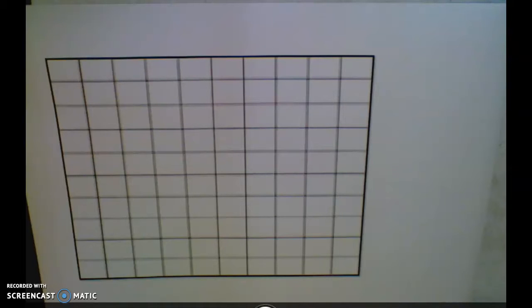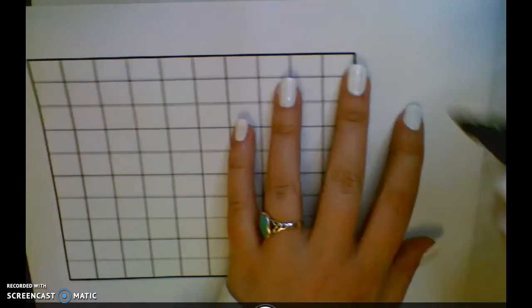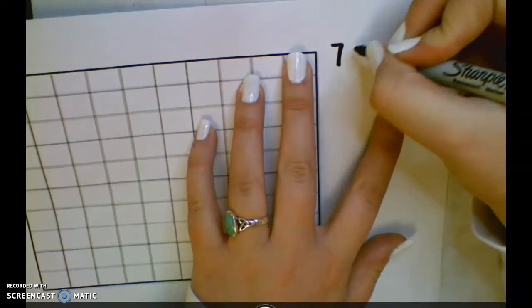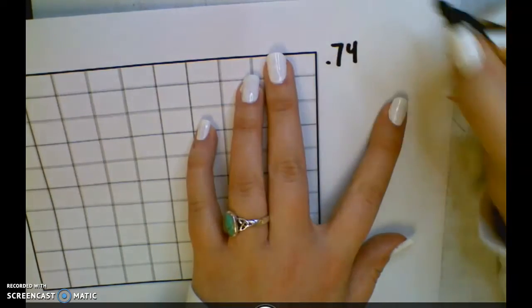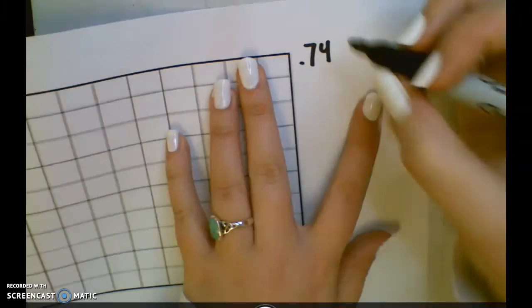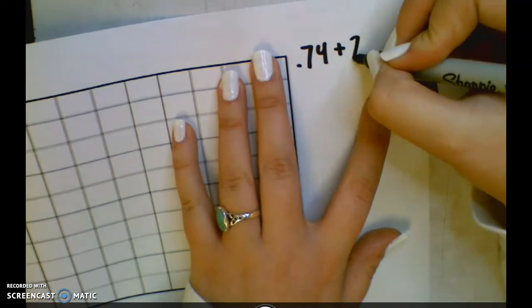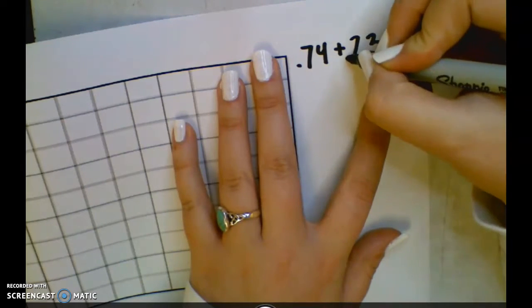Today we're going to learn how to model decimal addition. For our problem, we are going to start with 74 hundredths plus 23 hundredths.